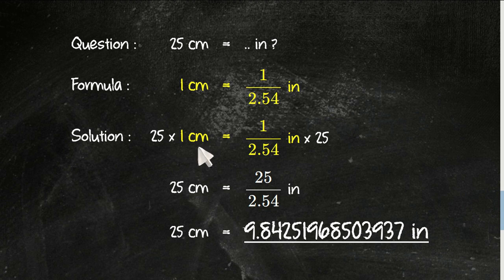So, 25 times 1 centimeter equals 25 centimeters. And 1 over this number - when you multiply an integer number with a fraction, you just need to move. I mean, you need to multiply 25 with this number.